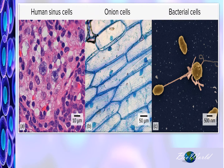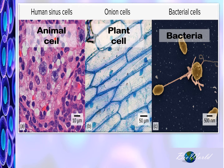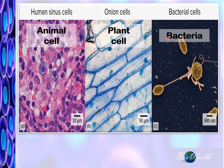Here are three different microscope images of three different cells: human sinus cells representing animal cells, onion cells representing plant cells, and bacteria. Observing these images, you can draw a few conclusions. Firstly, looking at the scale, the plant cell is the largest and the bacteria the smallest. Besides that, the nucleus is clearly visible in the animal and plant cell, but not in bacteria. Also, the cytoplasm of the animal and plant cell have smaller structures in them, while the cytoplasm of bacteria appears clear.